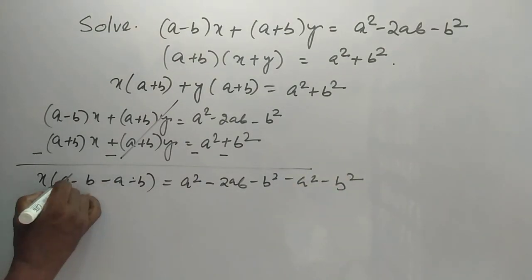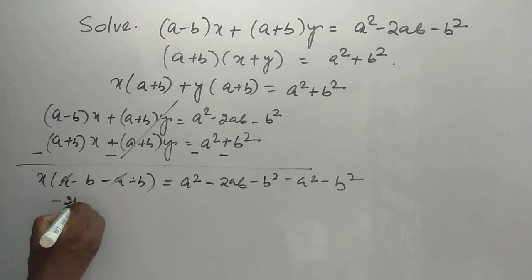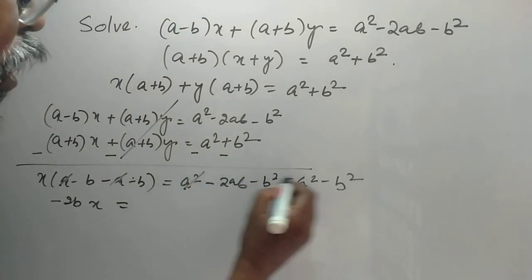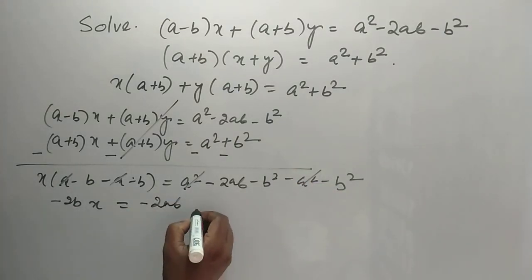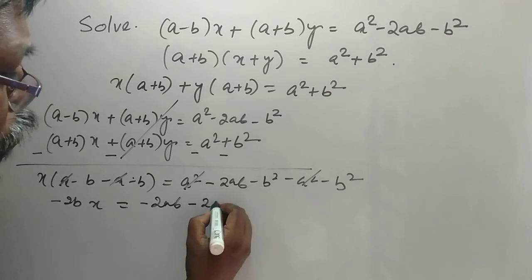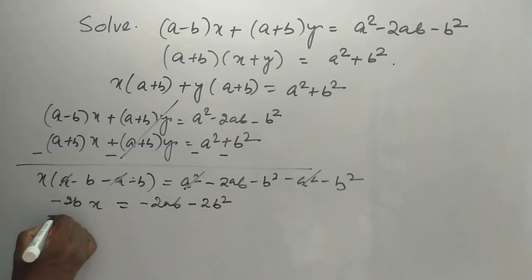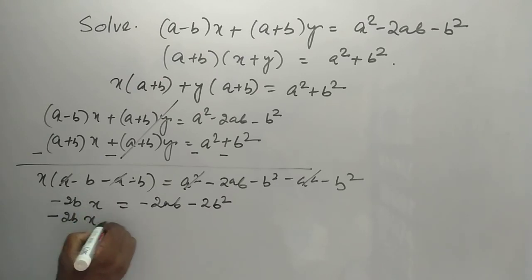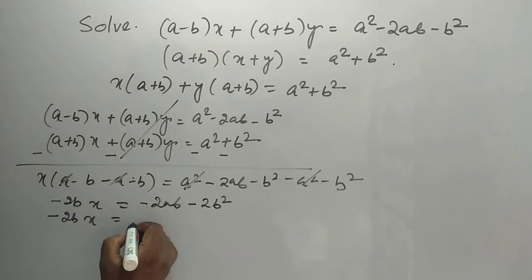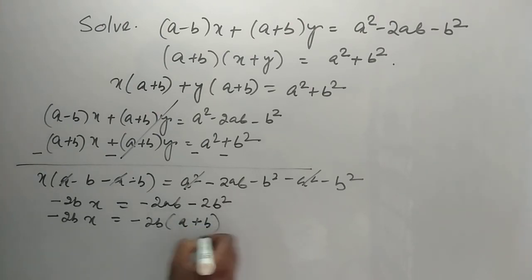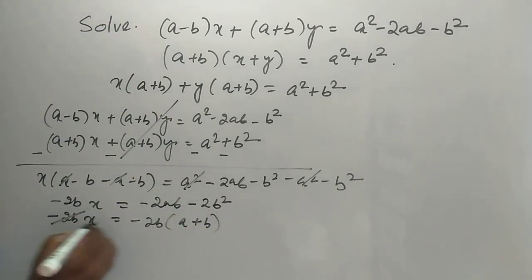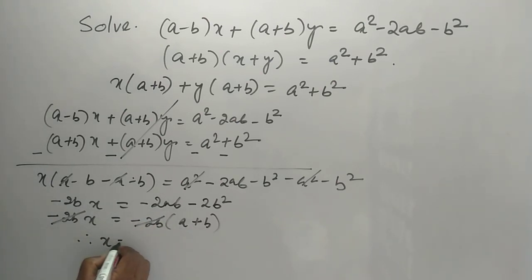Simplifying the x coefficient: minus 2ab into x is equal to minus 2ab. Therefore, x is equal to a plus b.